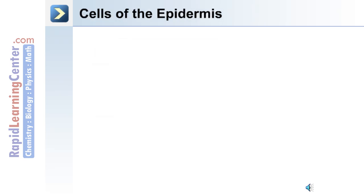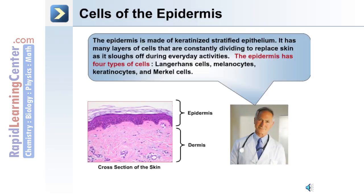There are different cell types within the different layers of the epidermis. The epidermis is made of keratinized stratified epithelium and includes cells that are constantly dividing to replace the skin as it sloughs off during everyday activities. The four types of cells in the epidermis are Langerhans cells, melanocytes, keratinocytes, and Merkel cells.